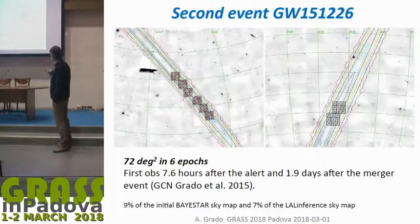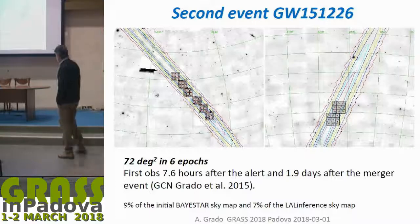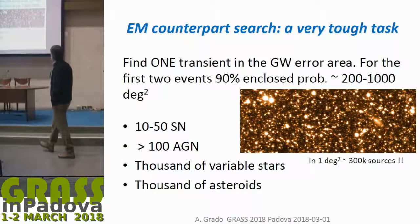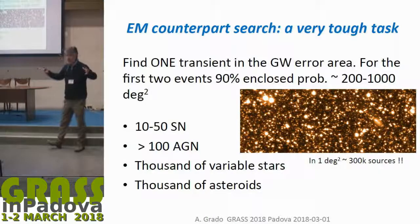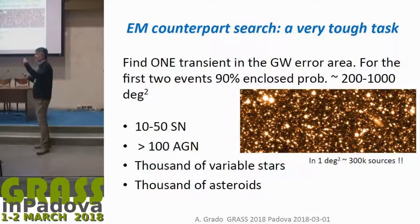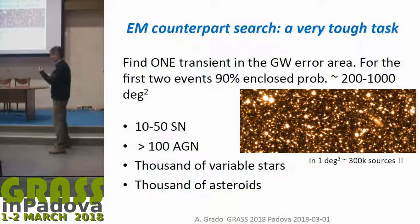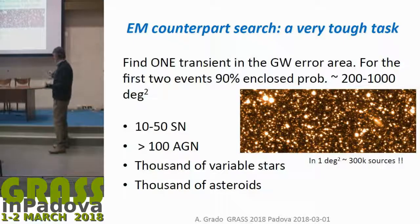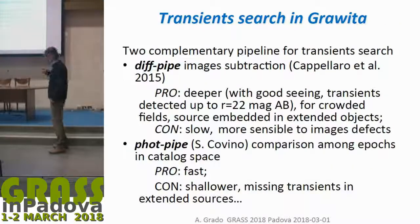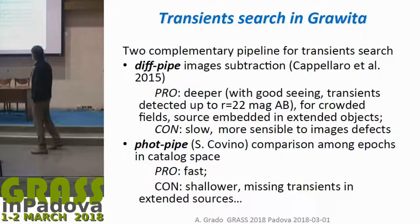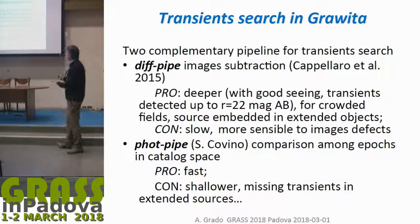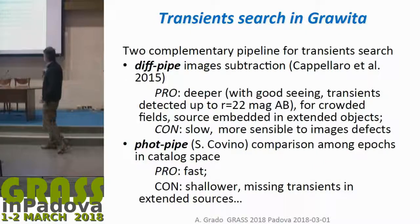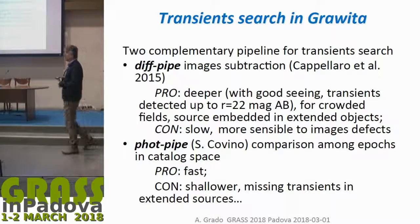For the second event, we imaged 72 square degrees in six epochs. When you do the observations you then have to search for variability — sources that changed in magnitude. This is not an easy job because you have thousands of variable sources in your field. Within GRAVITA, we developed two pipelines: one working on image subtraction, developed by Enrico and collaborators, and one operating in catalog space which is much faster but slightly less deep.